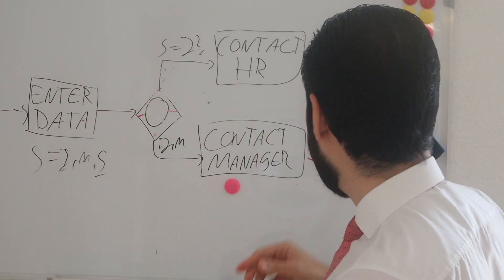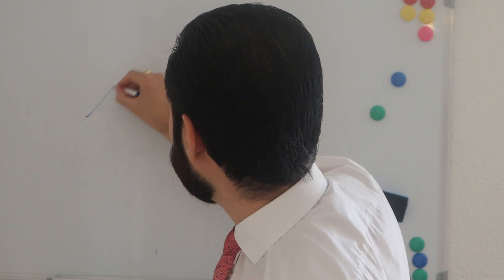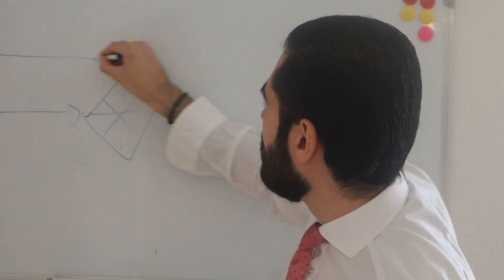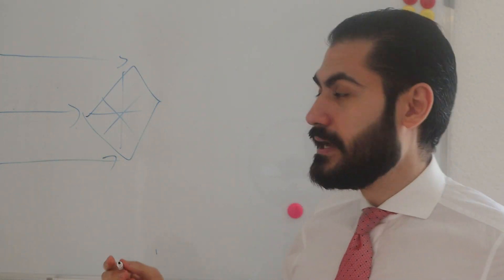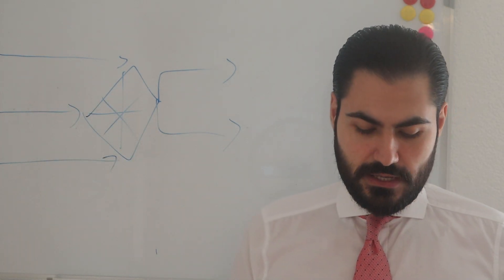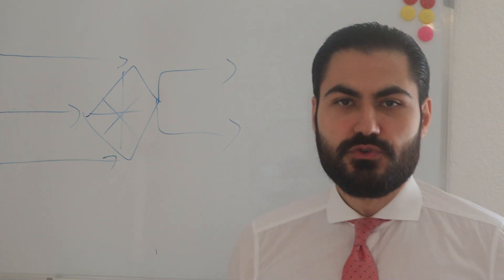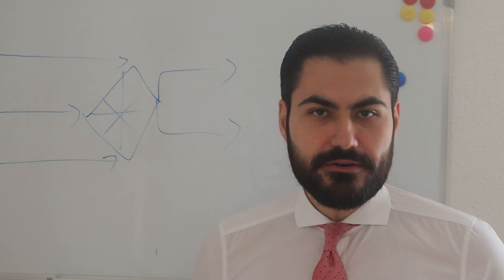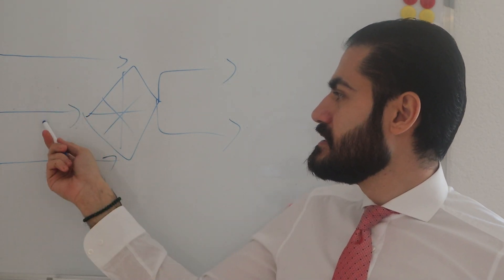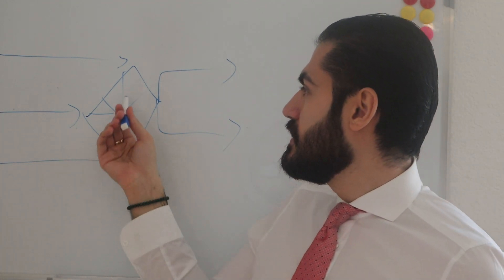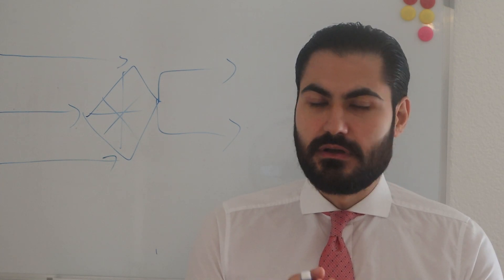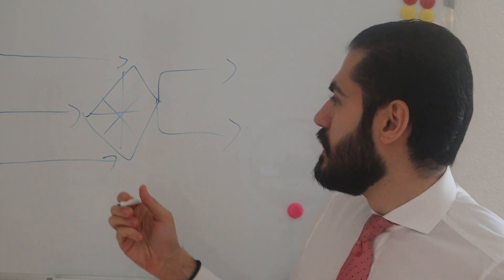Now let's look at the complex gateway. It looks like a star with several lines inside. Multiple instances can come in. For example, imagine you send out requests to three suppliers asking for an offer. Each incoming line represents an offer from a supplier. On the complex gateway you can specify a rule — say: as soon as I have received two offers, I move on.